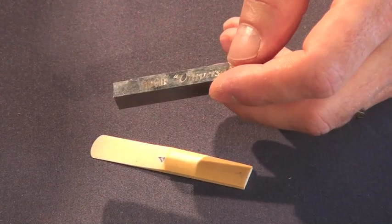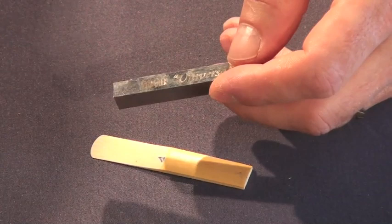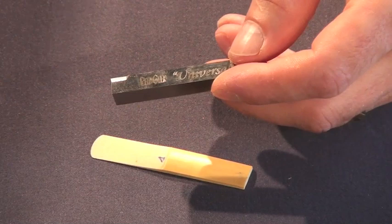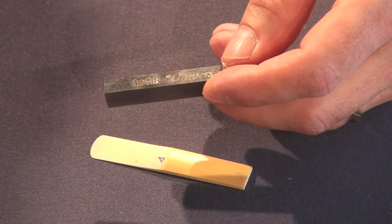On my reeds I used to work with files, reed knives and Dutch rush. But since I have this small block of real hard American steel with a square cut, the ReadGeek, my life became easier.